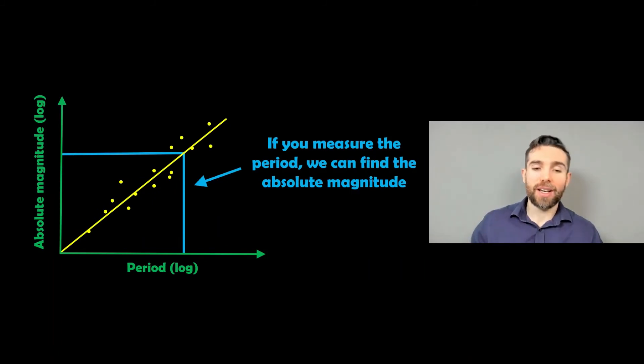So we would do something like this. Let's say we have a period there. We go up to the yellow line and across we've then got its absolute magnitude. Now, the absolute magnitude is the brightness of the star from a standard distance for all stars. So the absolute magnitude is always from the same distance, whereas the apparent magnitude is how bright we actually see it in the sky. So if we can measure how bright it appears to us and we know how bright the star is from a standard distance, we can then use a relationship there to get the distance, which is what we're going to do now.